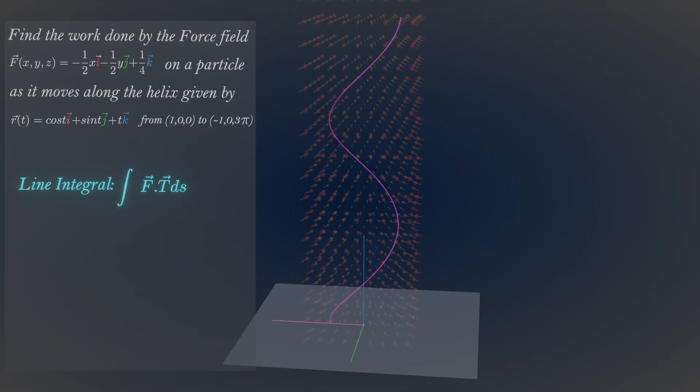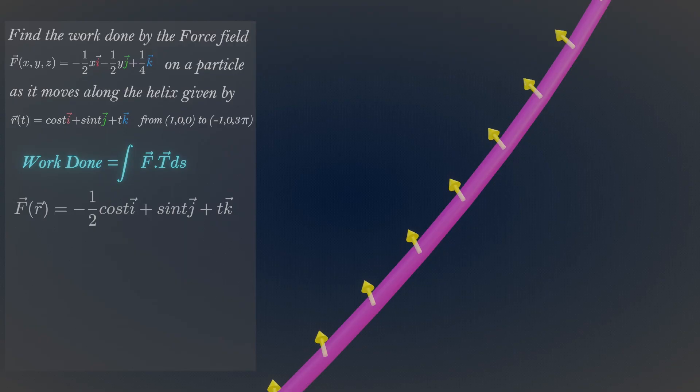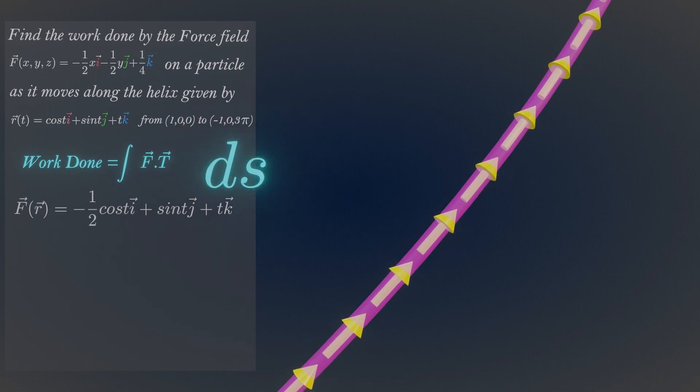First let's get the force field acting only on curve points. Now you can remove other unwanted force fields. Now compute this dot product. Project every force field in the direction of unit tangent vectors and multiply its magnitude with the arc length of the curve. It's difficult to compute using this integral formula, but we can convert it into a more simpler form.